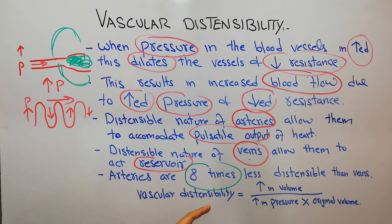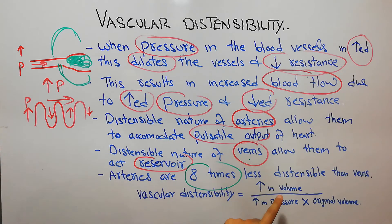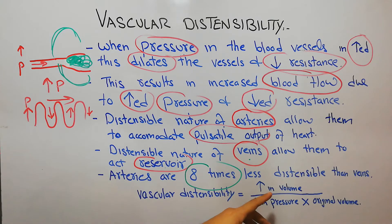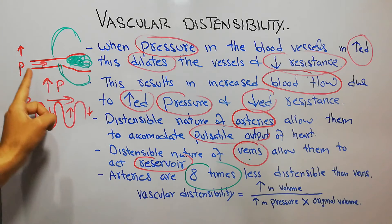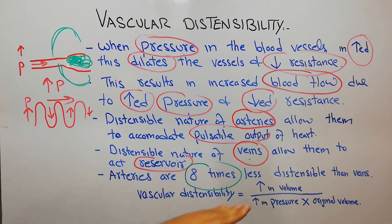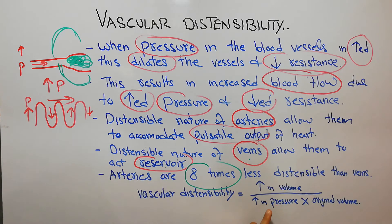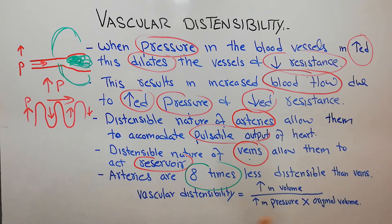Vascular distensibility is calculated as the increase in volume divided by the increase in pressure multiplied by the original volume. This equation shows how much volume a blood vessel gains for a given increase in pressure — essentially how blood vessels accommodate more volume with more pressure.